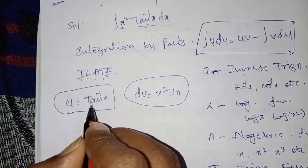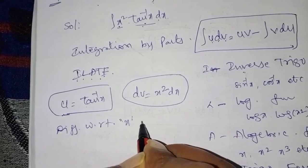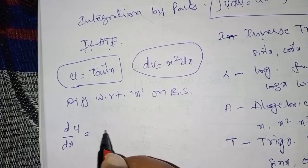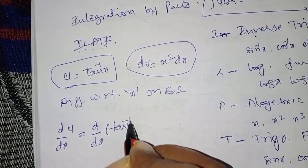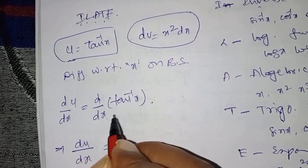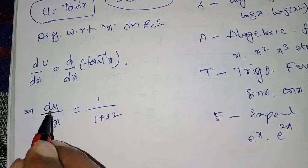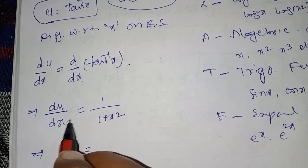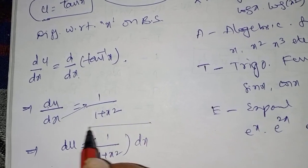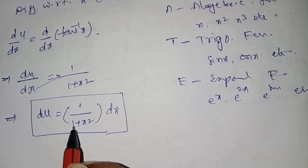Now u is equal to tan⁻¹x. Differentiate with respect to x on both sides: d/dx of u equals d/dx of tan⁻¹x, which is equal to 1/(1 + x²). From this we need to find du, so du is equal to 1/(1 + x²) dx.